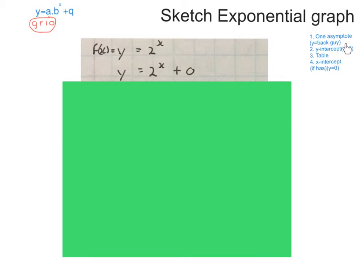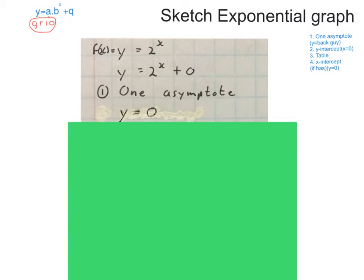The first thing I look for is the one asymptote, y equals to q. So y equal to naught. So I have the one asymptote y equals to 0.